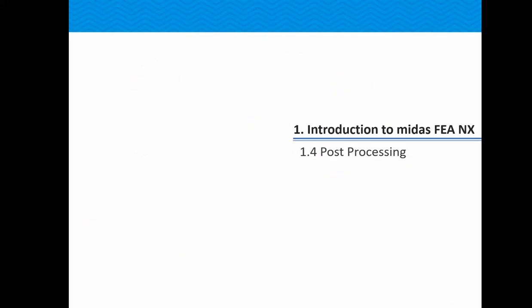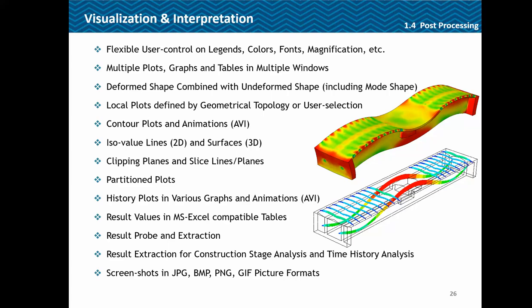Now coming to the post-processing part. It is quite flexible — you can modify the legend and control what each contour represents, its span, magnification, and so on. You can obtain vertical plots, graphs, charts, tables, deformed and undeformed shapes, localized plots, contours, iso-plots, clipping planes, history plots showing how results vary over time, and Excel-compatible results. You can probe at any point in the model and extract results for construction stage and time stream analysis in form of steps or stages.